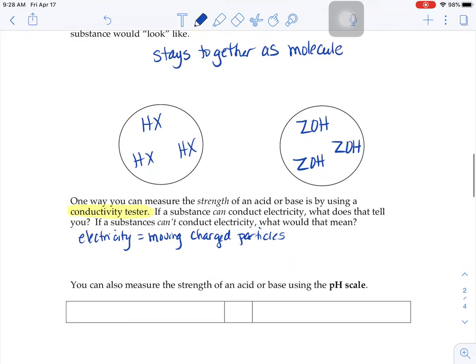So if it can conduct, that means that it's strong. Lots of ions. If it cannot conduct, that means it doesn't have any charged particles floating around. It's molecules, neutral molecules instead. So that means it's weak.